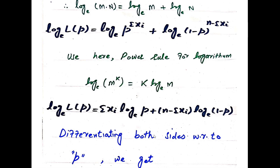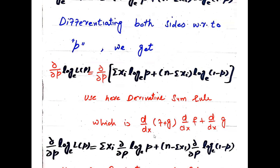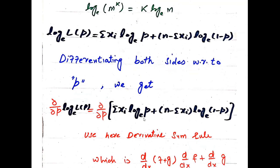Differentiating both sides with respect to p, we get ∂/∂p [log L(p)] = ∂/∂p [Σxi · log(p)] + ∂/∂p [(n - Σxi) · log(1 - p)]. Note that we use the natural log (log base e), not log base 10 or base 2.